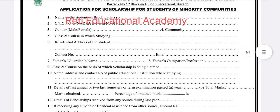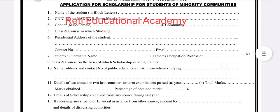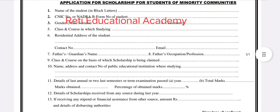Number 5 is the class, field, and department. Number 6 is the residential address of the student — you have to provide where you are staying; if you are in a hostel, give your home address. Also provide your contact number and email address.